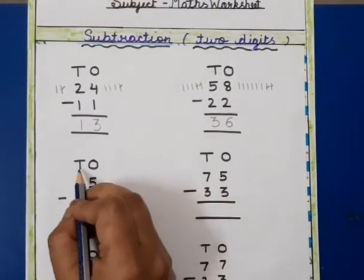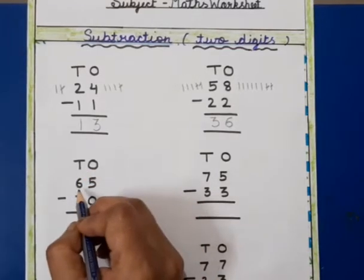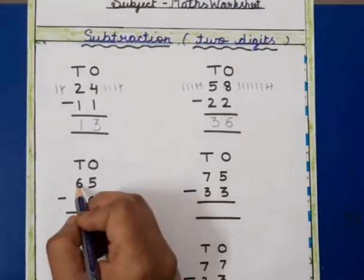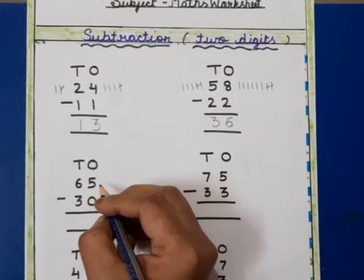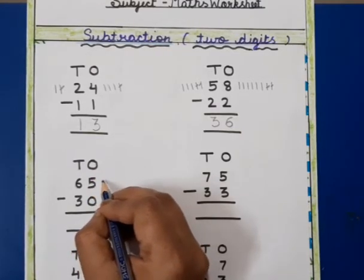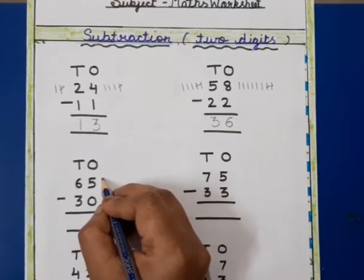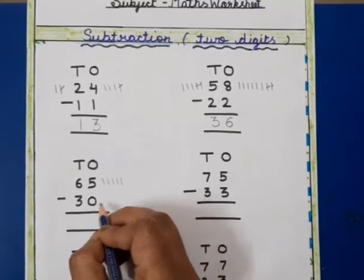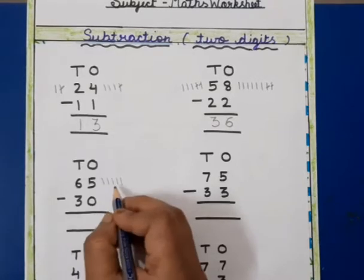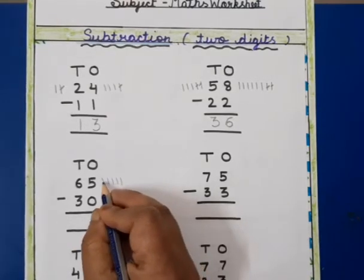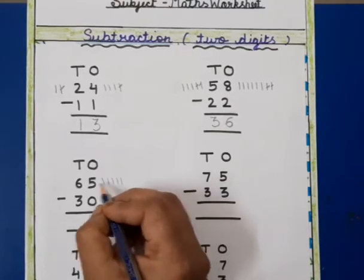This is ones and tens. This is 65 and this is 30. Now we will subtract 30 from 65. This is ones and this is 5. We will draw five lines. This is 0 — zero means nothing — so we will write 5 here.